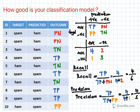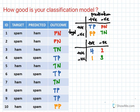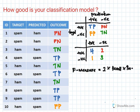Another thing you can measure from your confusion matrix is the F-measure. F-measure helps measure both recall and precision at the same time. The formula for F-measure equals 2 times recall times precision, divided by recall plus precision.